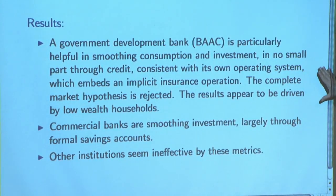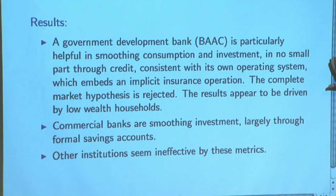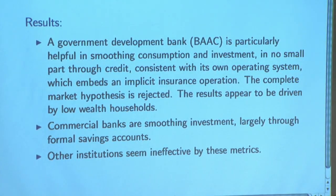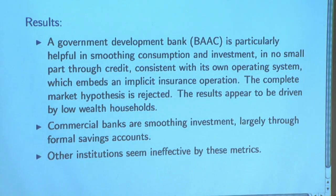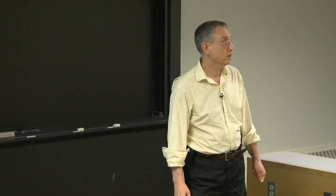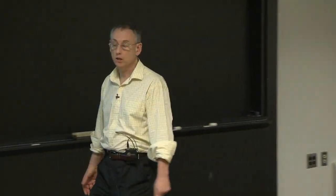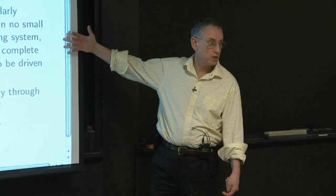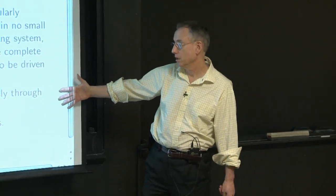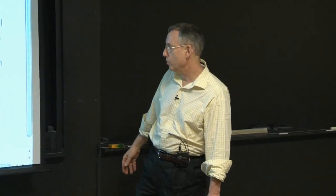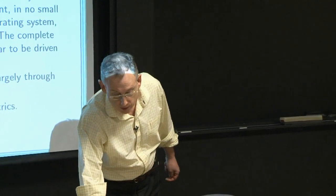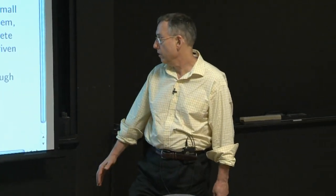In the financial crisis, the World Bank went in and, seeing the stereotype — since finance companies and commercial bank failures triggered the Asia financial crisis — looked at the BAC's history of over-arrears and concluded it was another disaster. But actually, they were running an insurance operation, and that's what shows up in the consumption data. Commercial banks are helping to smooth somewhat, but largely through formal savings accounts — loans are pretty thin in the data.